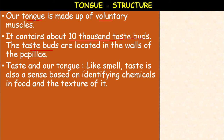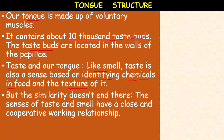Like smell, taste is also a sense based on identifying chemicals, which means the receptors present in the tongue are also chemoreceptors. Chemoreceptors detect the chemicals present in the food, and the texture of those chemicals can be detected by these taste buds. The receptors in the nose are called olfactory receptors, while the receptors present in the tongue are called gustatory receptors. Though they both have the ability to detect chemicals, they are chemoreceptors with some difference.